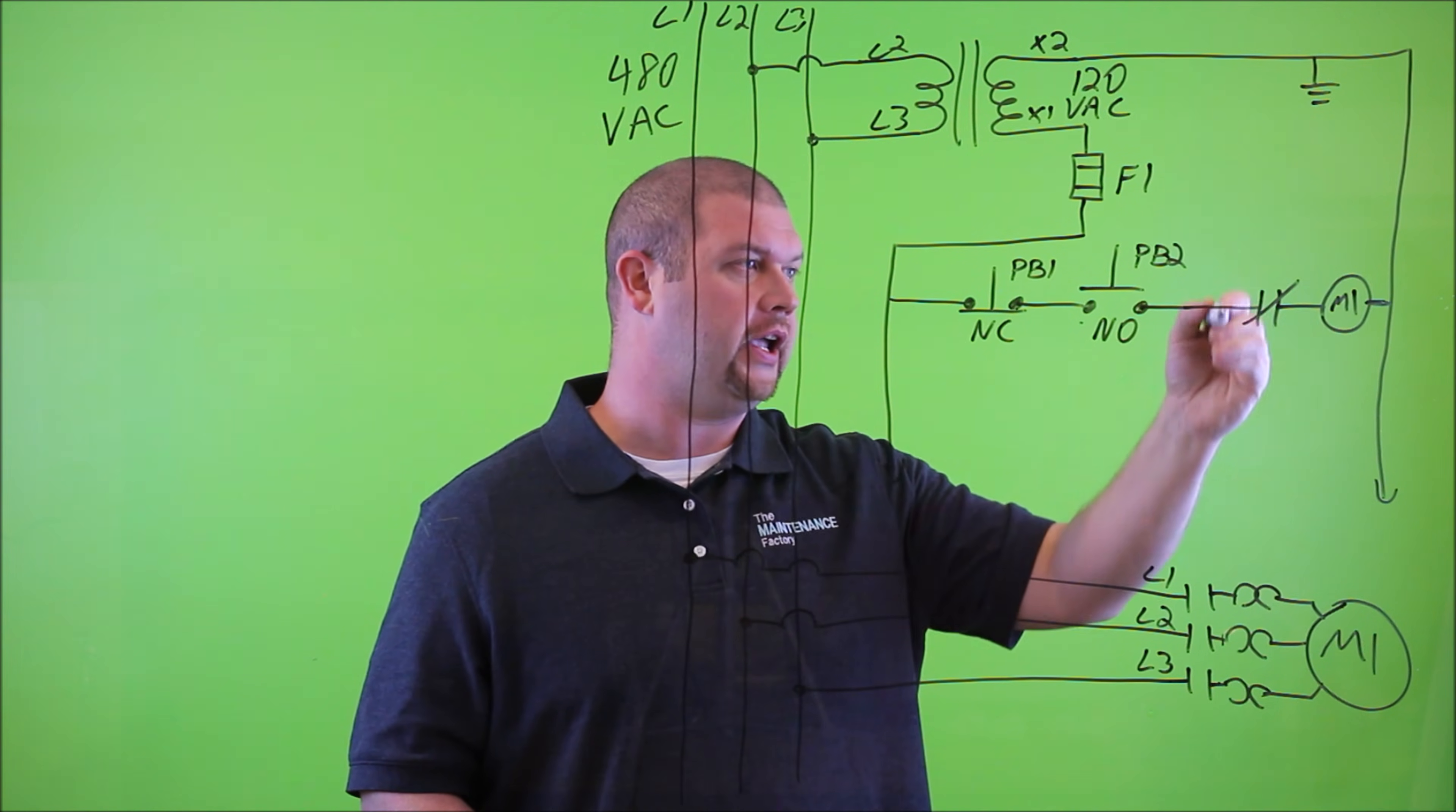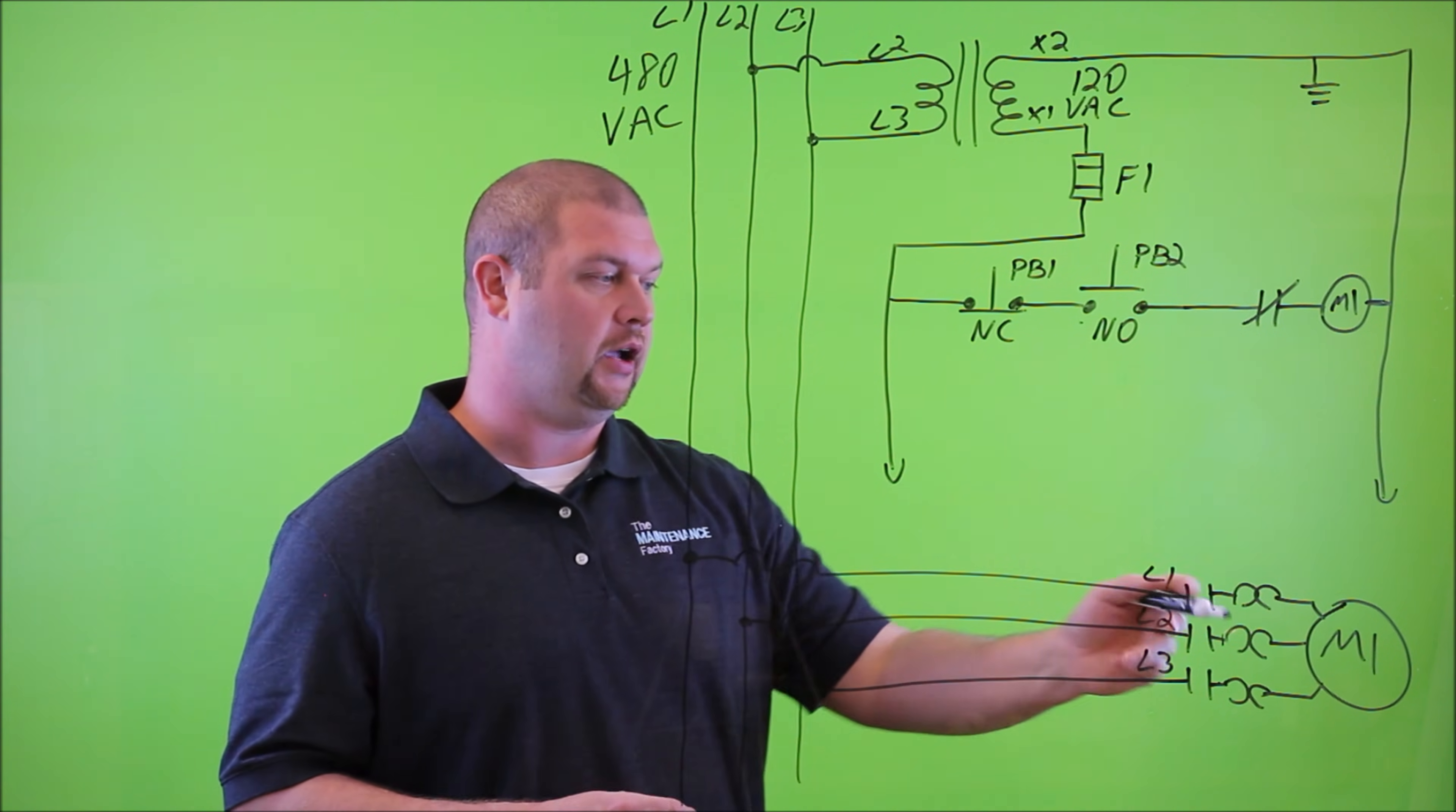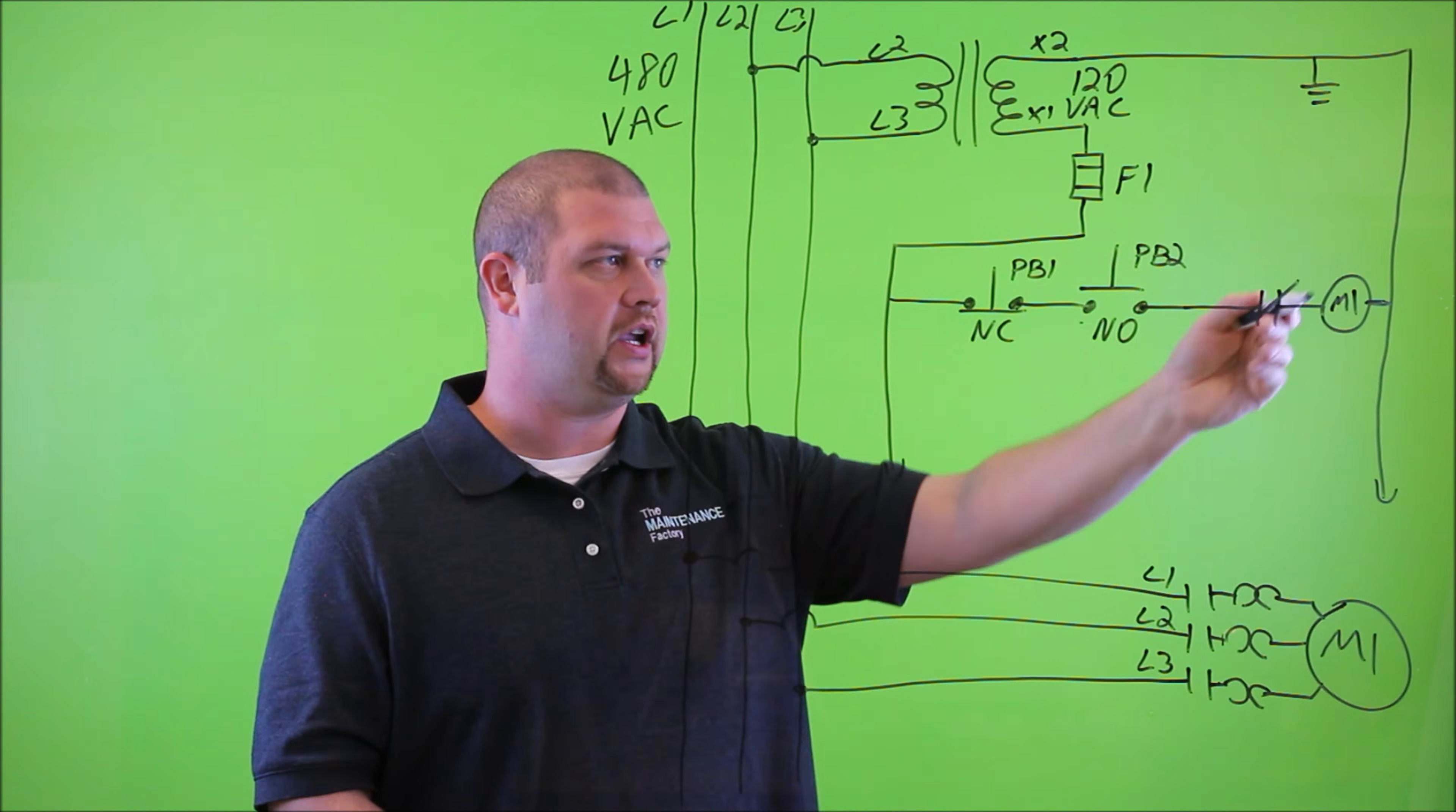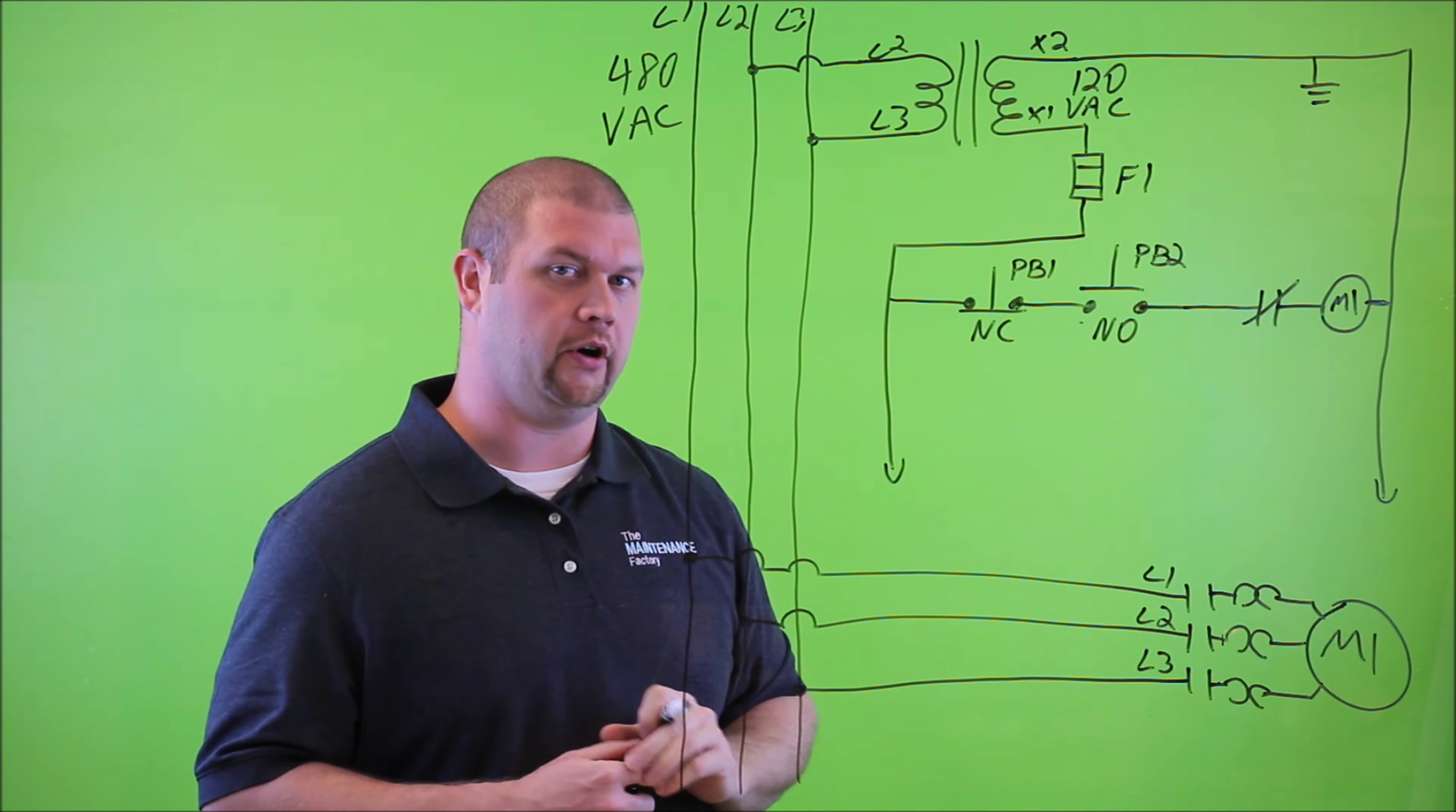Now, this symbol here represents a normally closed set of contacts that will physically exist on this overload right here. So when this overload is in its regular state, it will have a set of contacts on it that are normally closed, not only for each phase of power for the motor, but also an auxiliary contact that we can use to put into this control circuit.